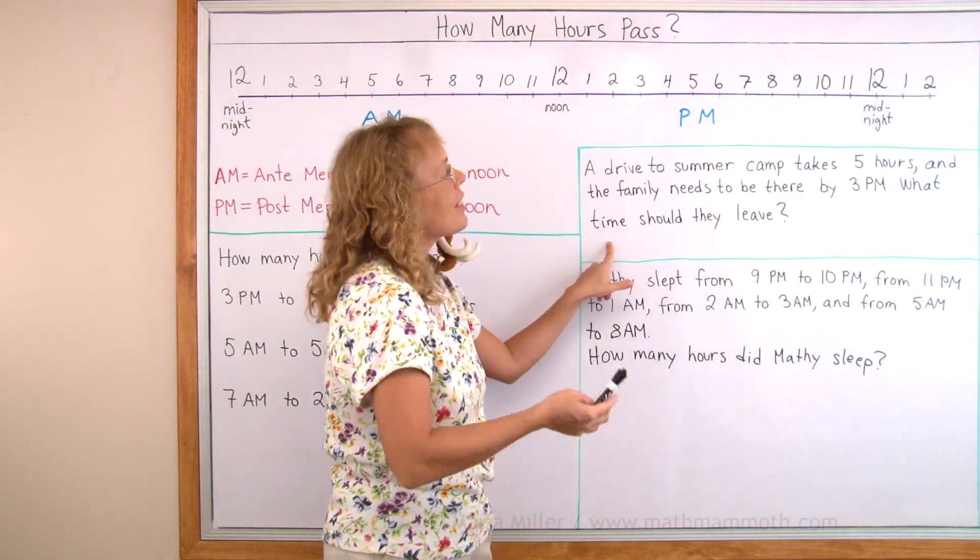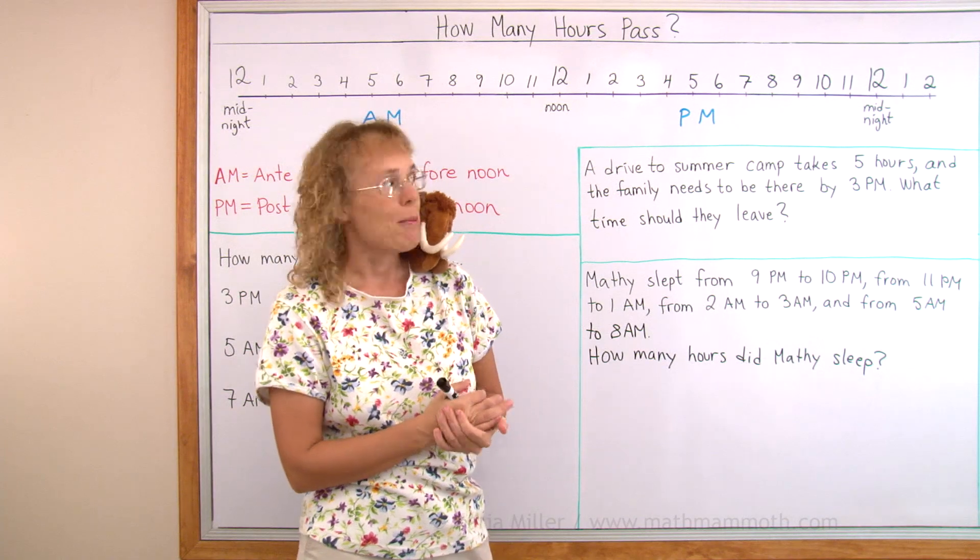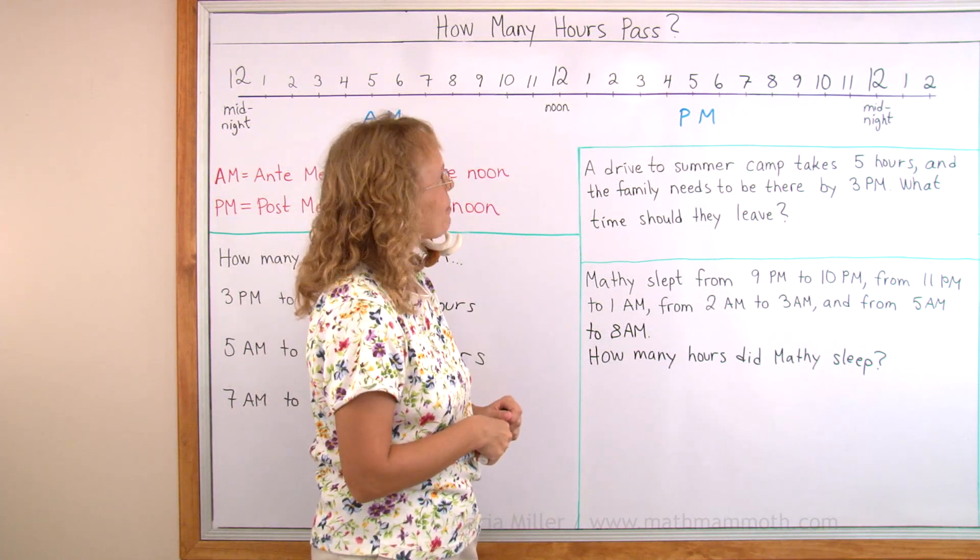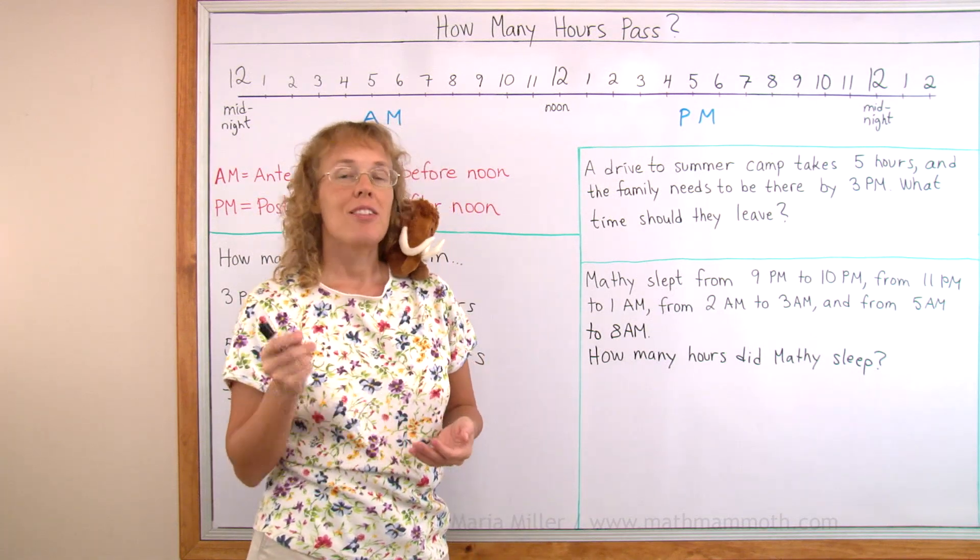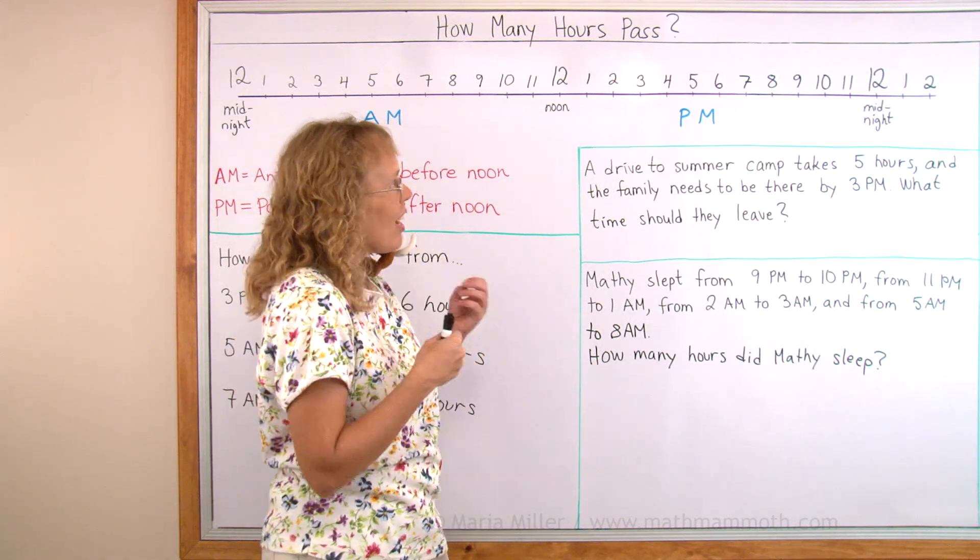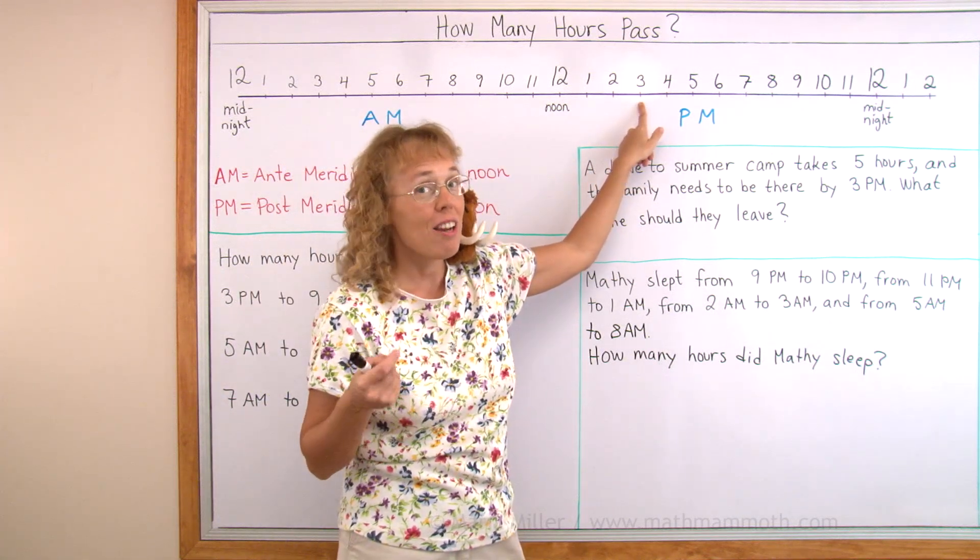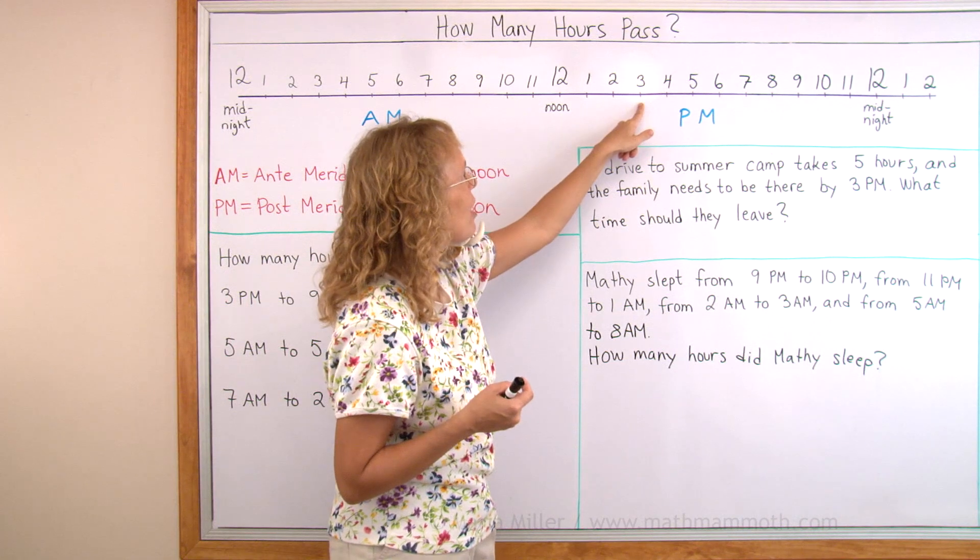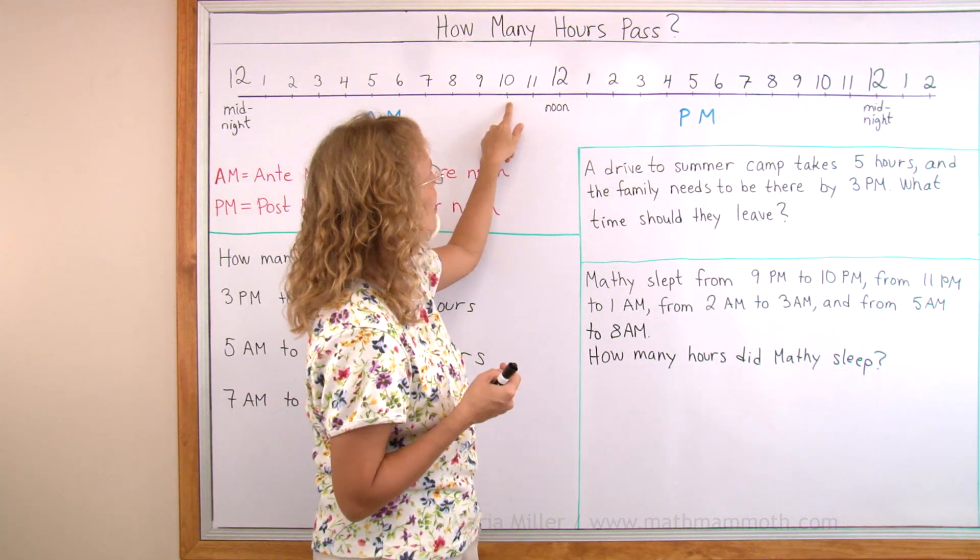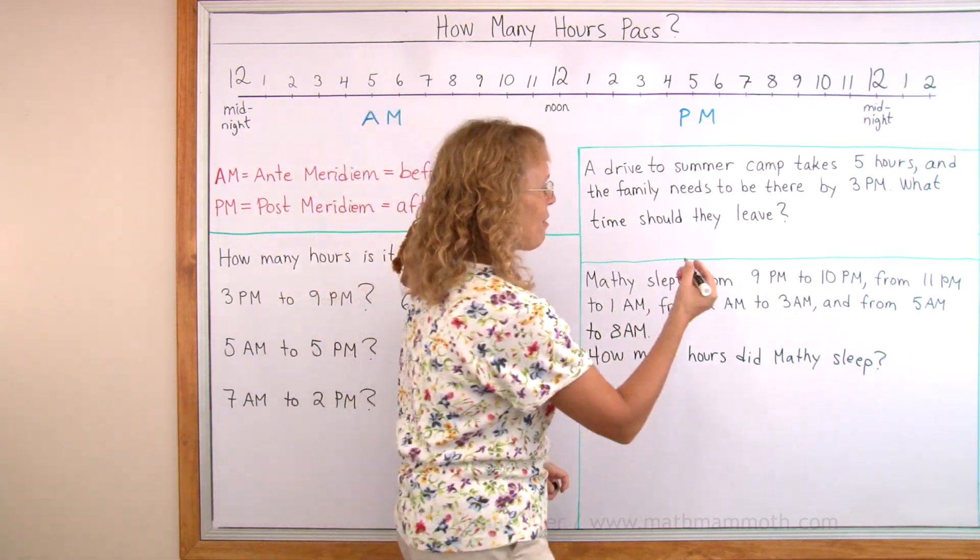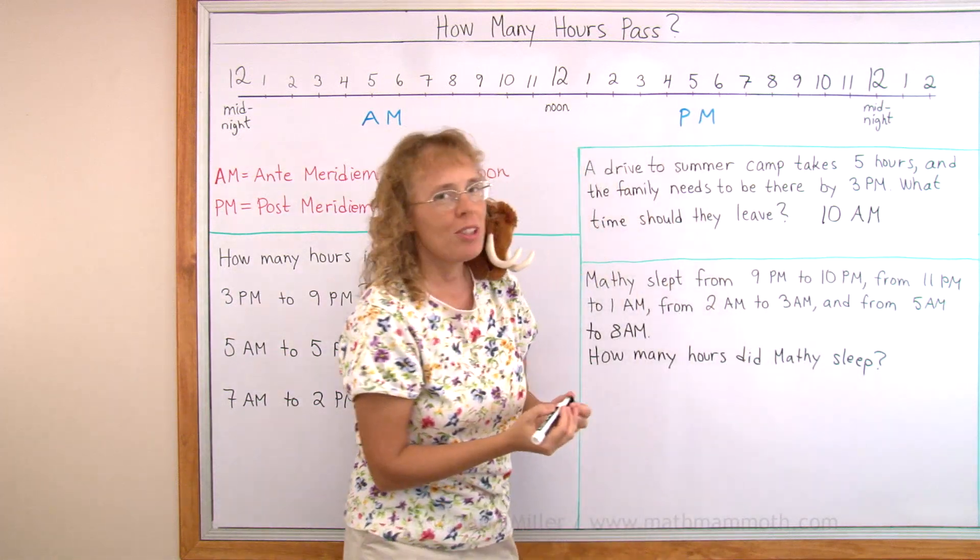A drive to summer camp takes 5 hours and the family needs to be there by 3 PM. What time should they leave? The family needs to be there by 3 PM. I have my timeline so I could find here 3 PM. And if they're going to use 5 hours to drive, I can go backwards 5 hours. Over there it is. 10 AM is when they need to leave.